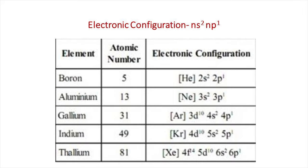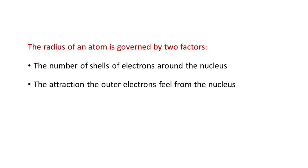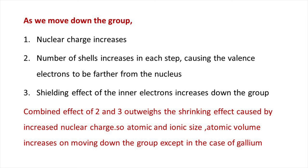On moving down the group, atomic radius increases. The radius of an atom is governed by two factors: the number of shells of electrons around the nucleus, and the attraction of the outer electrons from the nucleus, which depends upon the shielding effect. Electrons in an atom can shield each other from the pull of the nucleus. On moving down the group, nuclear charge increases, number of shells increases, and the shielding effect of inner electrons increases, causing the valence electrons to be farther from the nucleus.